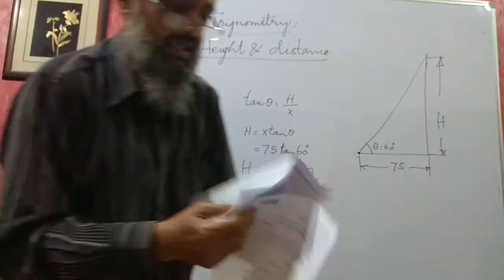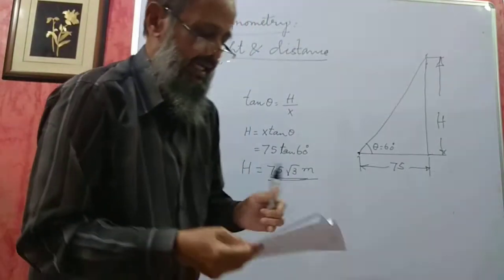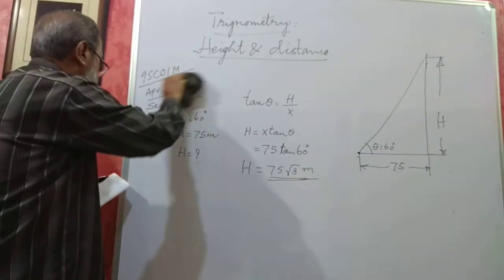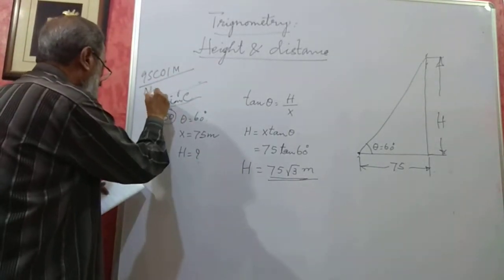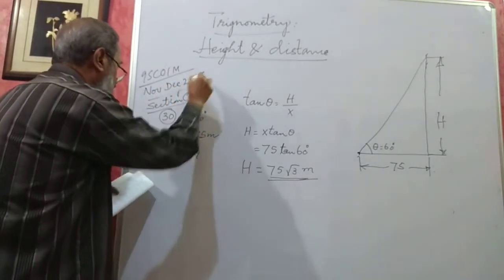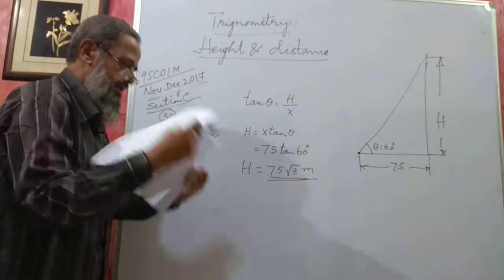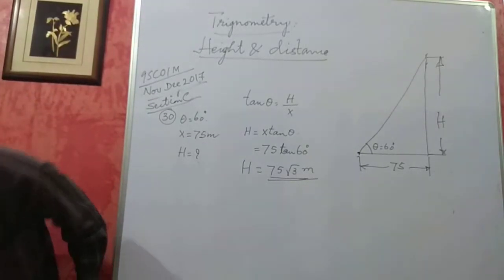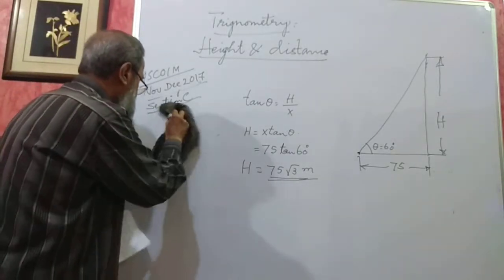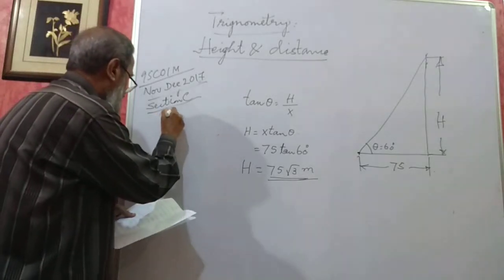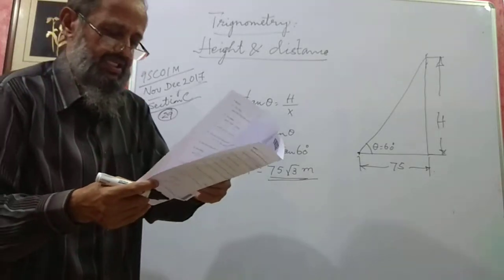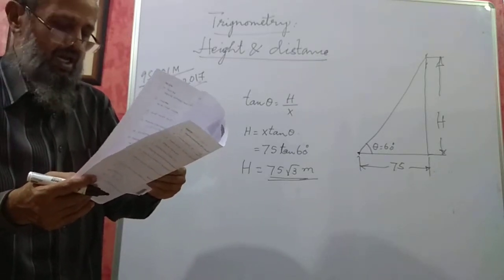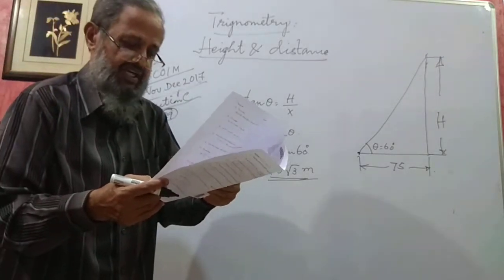Next, I will take a problem from 9SC01M of November–December 2017, Section C. The angle of elevation of the top of a tower is 30 degrees as seen by an observer at a distance of 200 meters from the foot of the tower. Find the height of the tower.